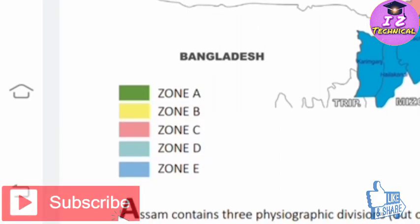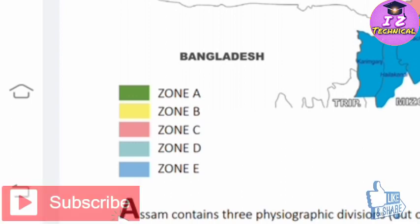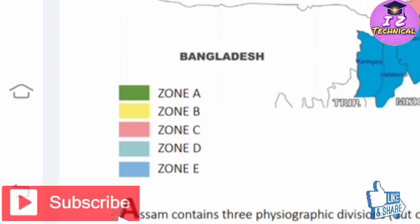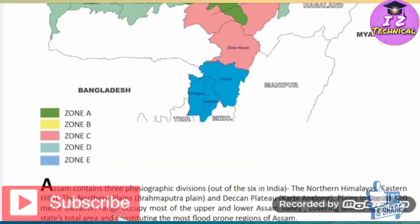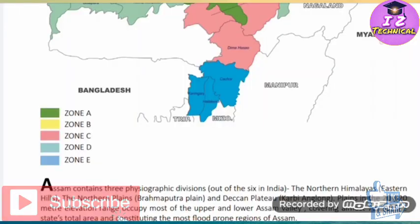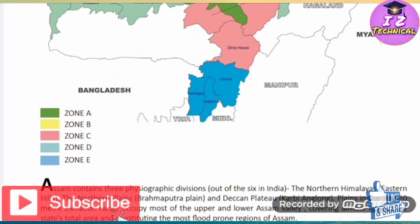I will see the zone A, B, C, D, and E. And the other one will see the zone A, B, C, D, and E.